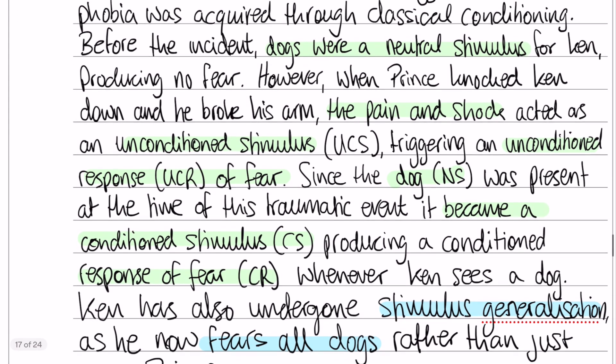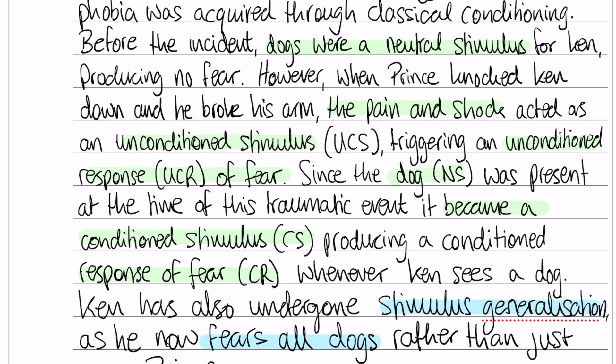So you can now see how we are applying. Before the incident, dogs were neutral for Ken, producing no fear. However, when Prince knocked him down and broke his arm, the pain and the shock acted as an unconditioned stimulus, because nobody teaches Ken to experience fear as a result of pain and shock. That unconditioned stimulus triggers an unconditioned response of fear. Since then, Prince has become a conditioned stimulus — because Prince was present at the time of the traumatic event and caused it, he is now a conditioned stimulus producing a conditioned response of fear.